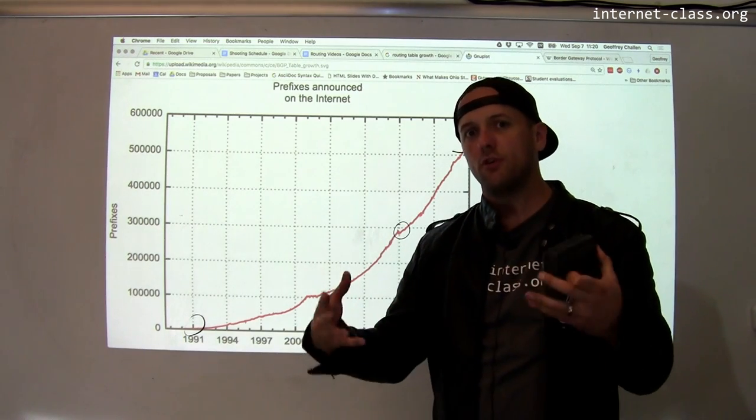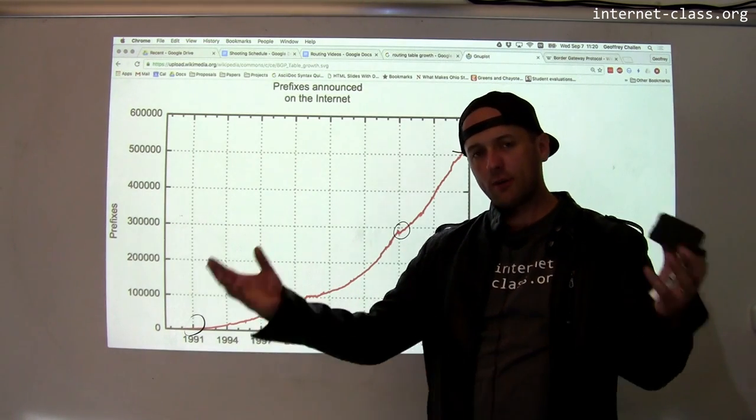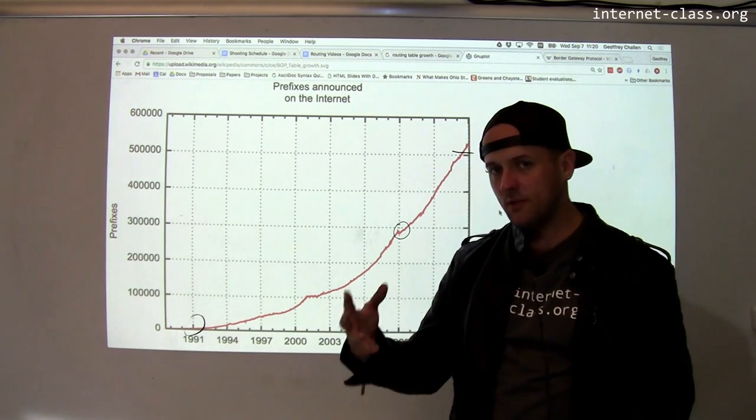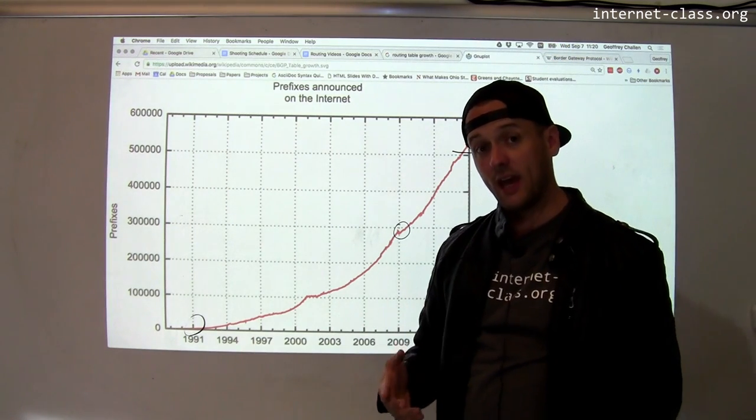And so suddenly, they announced a bunch of new prefixes. And all the routers on the internet had to support these prefixes, and it suddenly pushed a bunch of them over 512k.